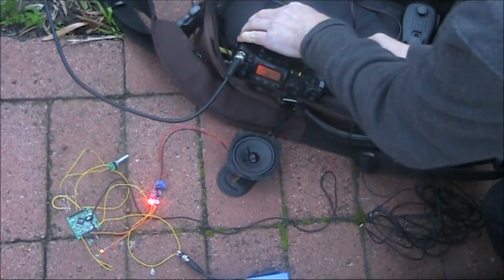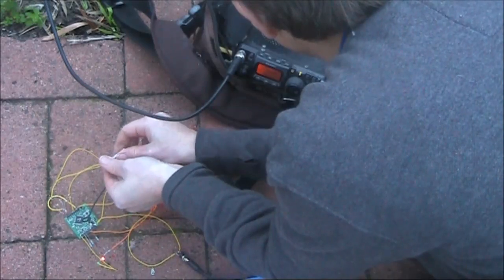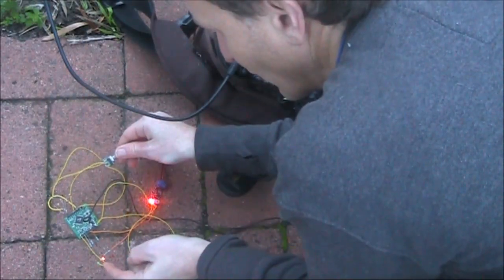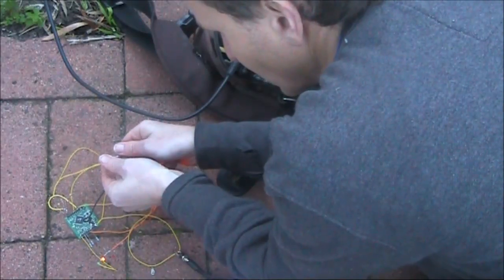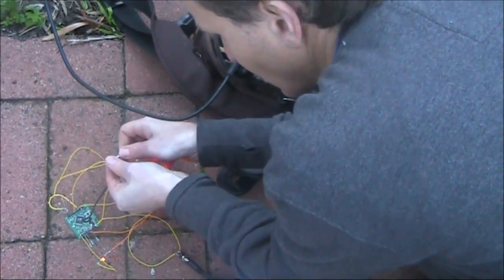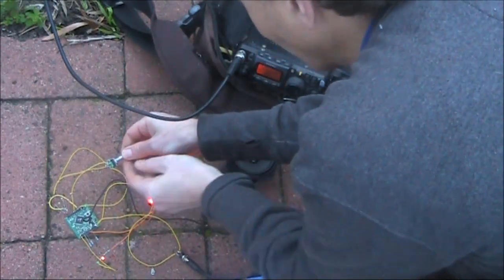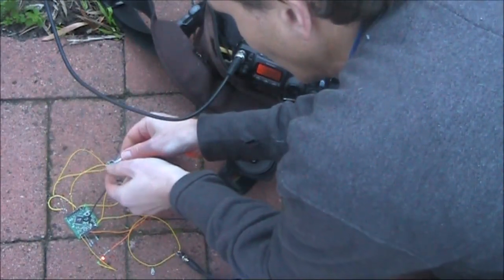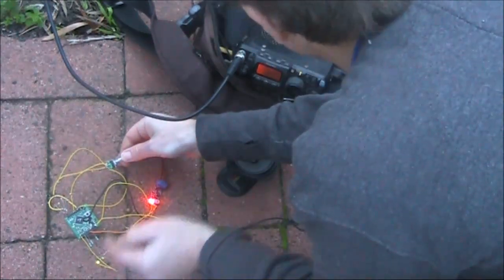This is the center frequency mode. You can see that because the yellow LED is on. Now if we want to change between the bandwidth and the center frequency, we just press the rotary encoder and the LED goes to green.